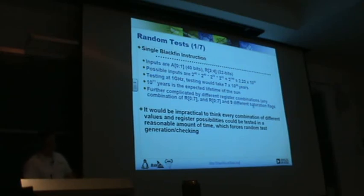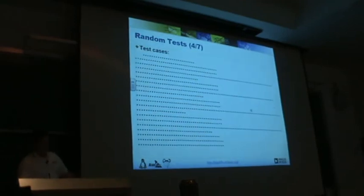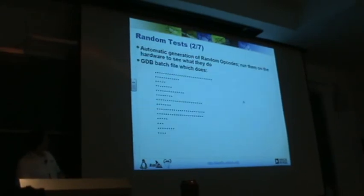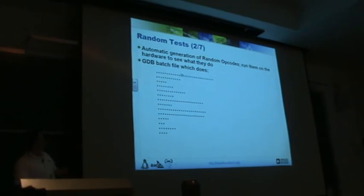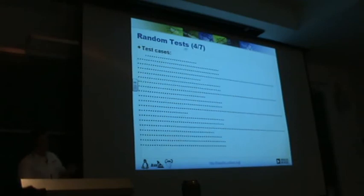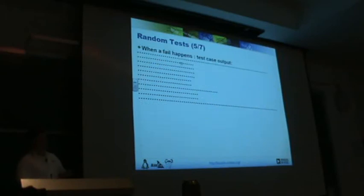Further complicated by different register combinations — R0 through R7 for two different register inputs — with nine different saturation flags. Trying to test a single instruction with every combination of every permutation of inputs is just not practical. So what we do is random test generation. We run these random tests on the hardware, generate a script that checks each value and what it should be, and then run it against the simulator to generate tests. When a test fails on the simulator, the infrastructure actually generates a standalone test case that you can use to debug the simulation.